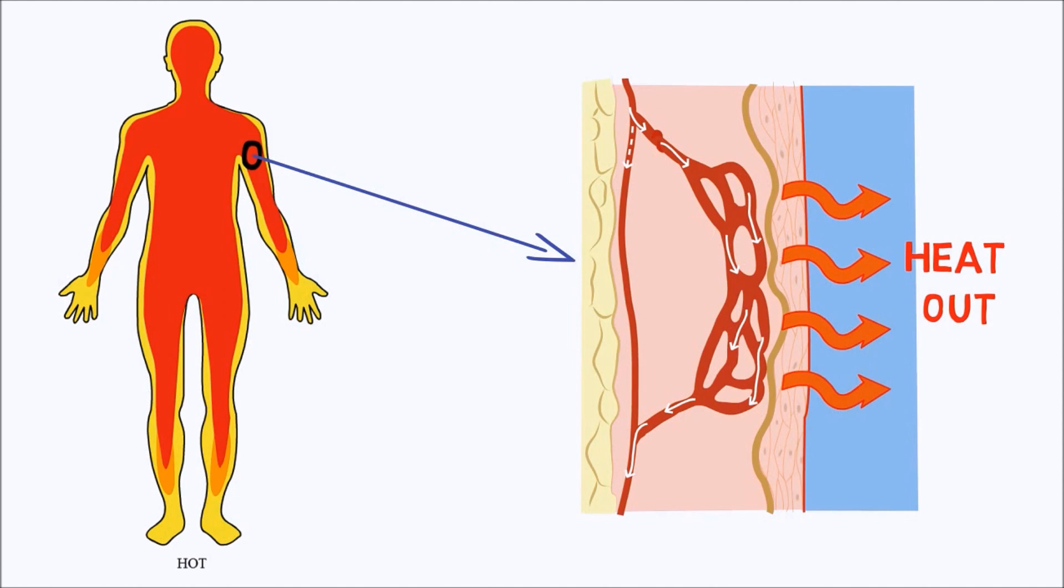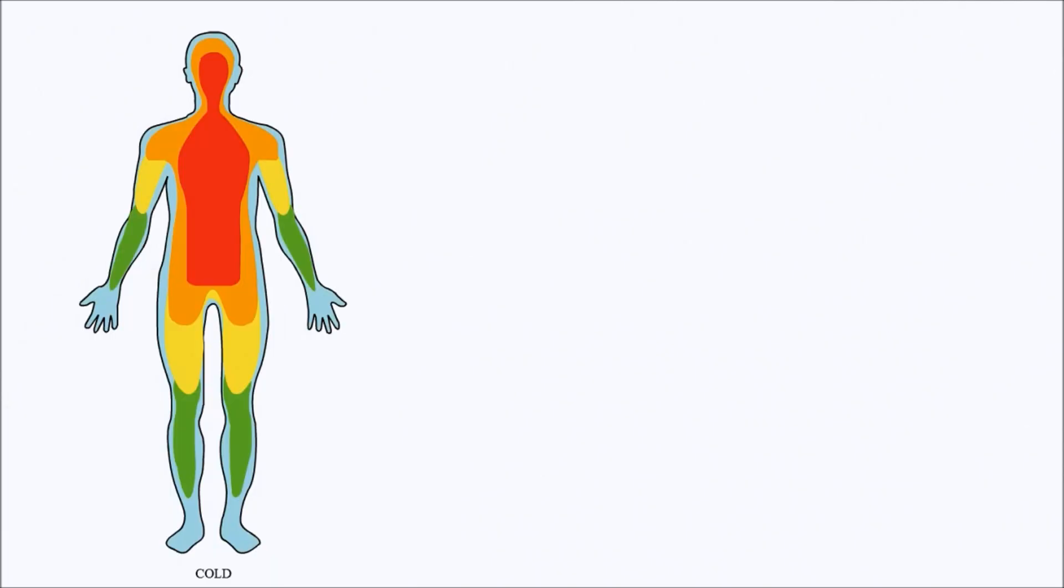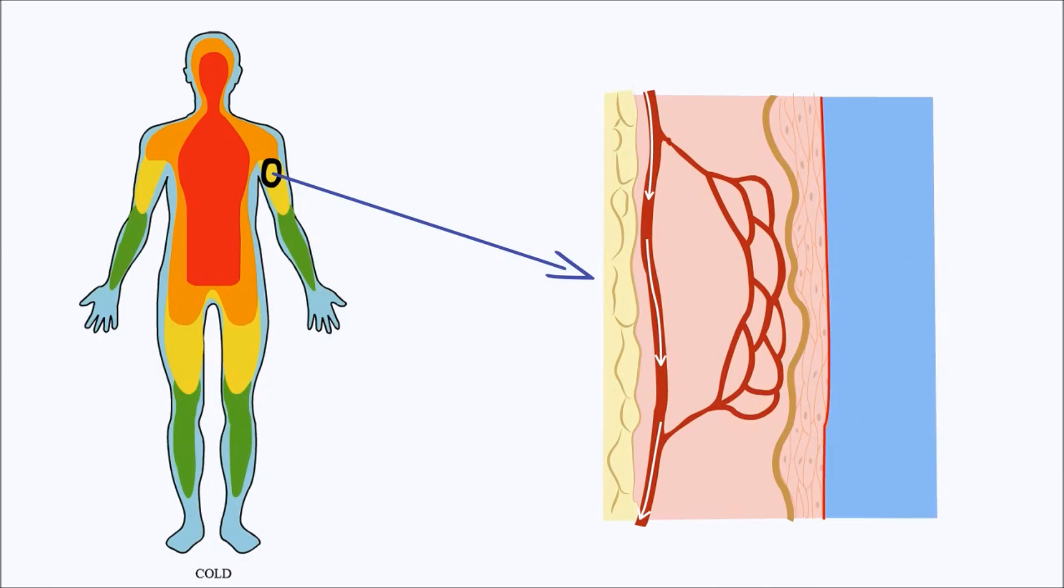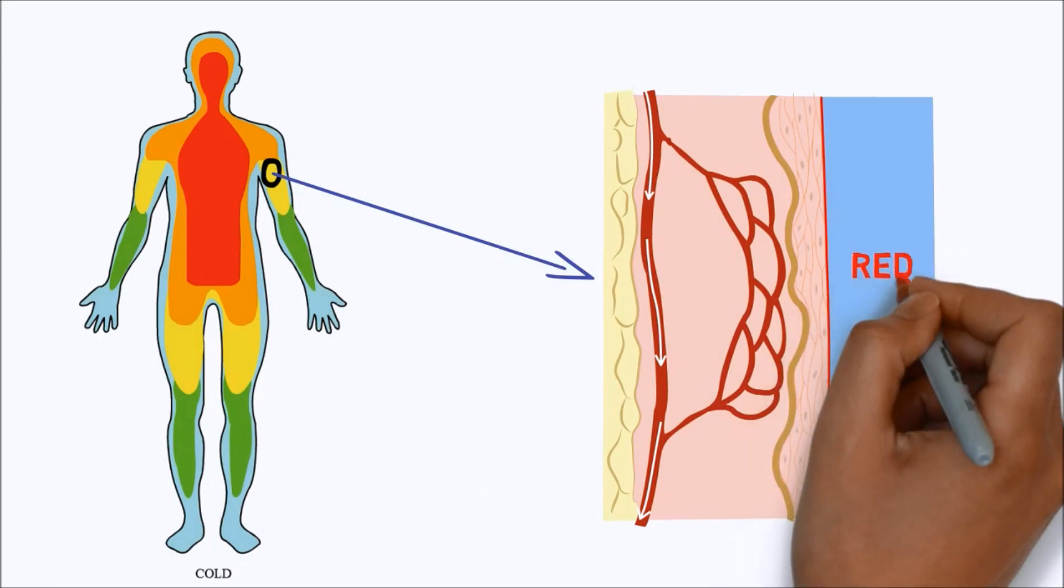When we are too cold, the blood vessels supplying warm blood to the skin become narrow or constrict. This reduces the flow of warm blood near the surface of the skin and reduces heat loss. This is why some people's skin looks pallor when they feel too cold.